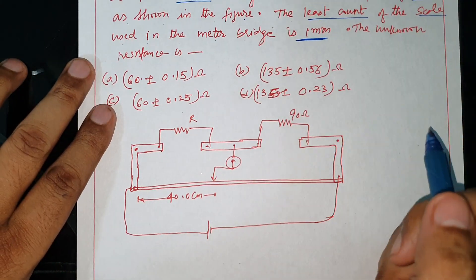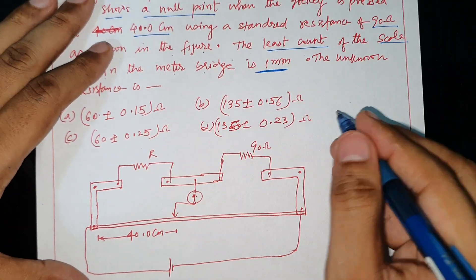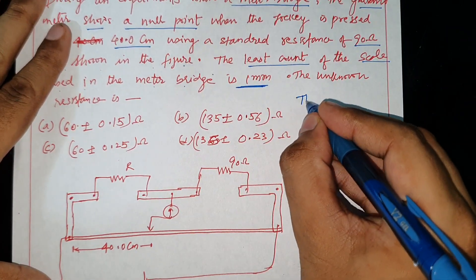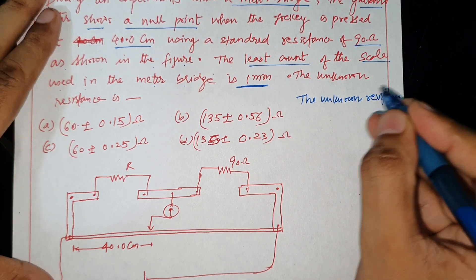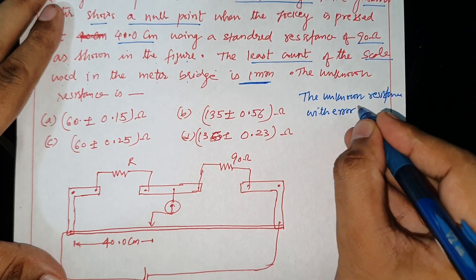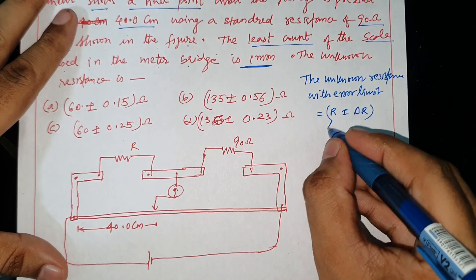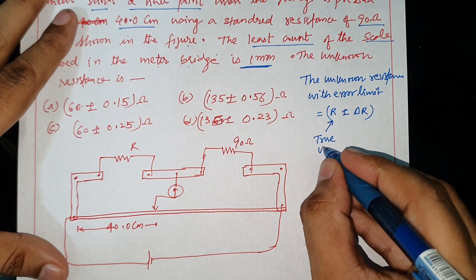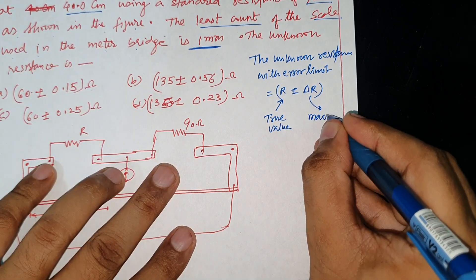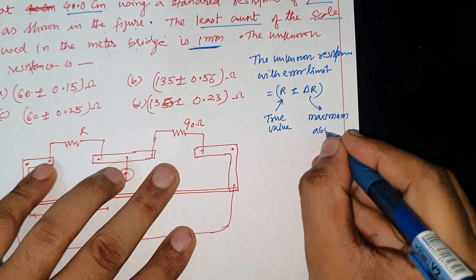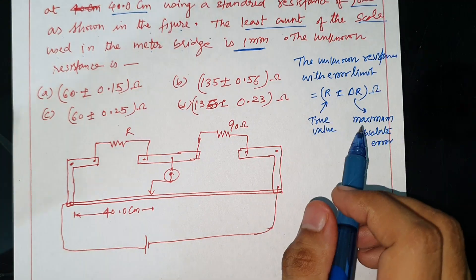The unknown resistance is to be found with error. The unknown resistance with error limit is asked — that is R plus minus delta R. This is the true value of R and this is the maximum absolute error.